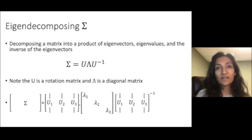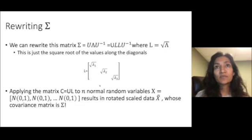Note that the eigenvector matrix U is actually a rotation matrix because it's orthonormal and can be normalized to have determinant one, whereas the matrix of eigenvalues is a diagonal matrix. If we rewrite sigma so that we have this matrix L, which is the square root of the diagonal matrix, then we get sigma equals U times L times L times U inverse.